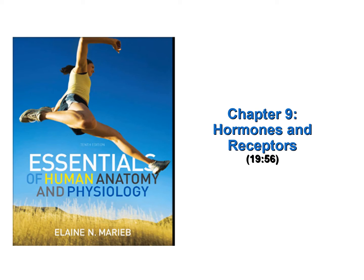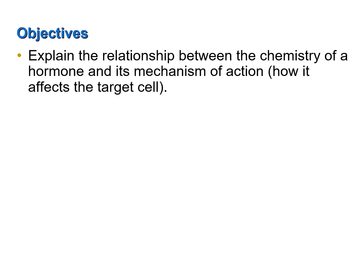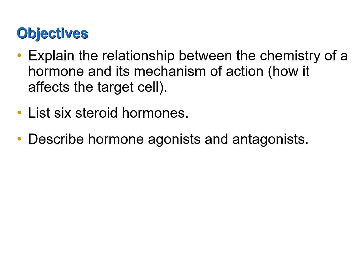The topic of hormones and receptors is discussed in this screencast. Information on this subject may be found in Chapter 9 of your textbook. This screencast was designed to achieve the following objectives: explain the relationship between the chemistry of a hormone and its mechanism of action, that is, how it affects the target cell; list six steroid hormones; and describe hormone agonists and antagonists.